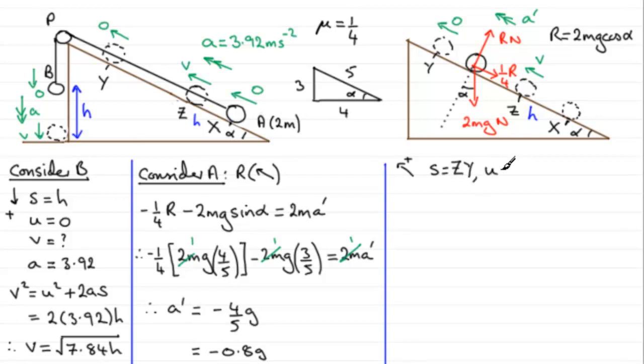U, the initial velocity. Now the initial velocity was this one here, v, which we worked out to be the root of 7.84h, so we'll just write that in, the root of 7.84h. And we've got v, the final velocity, not this v, this one here, which is going to be equal to 0.